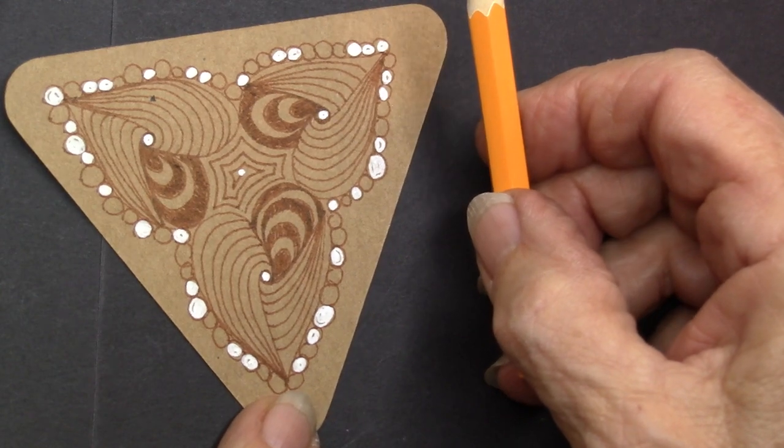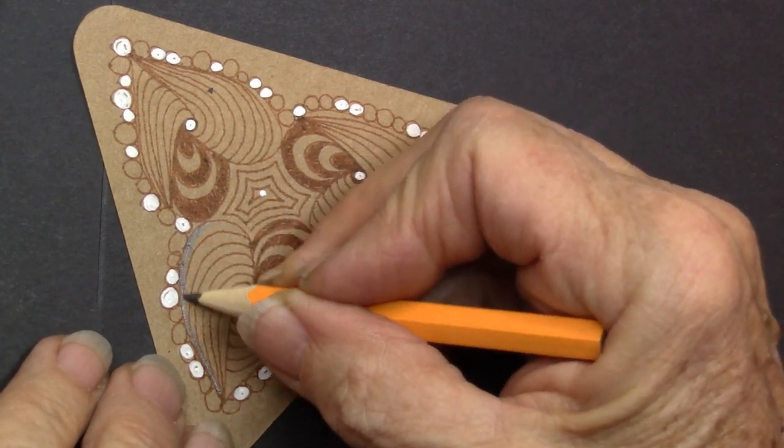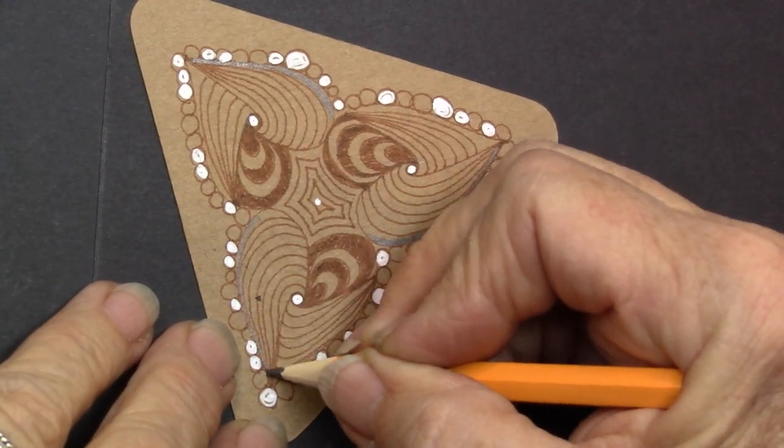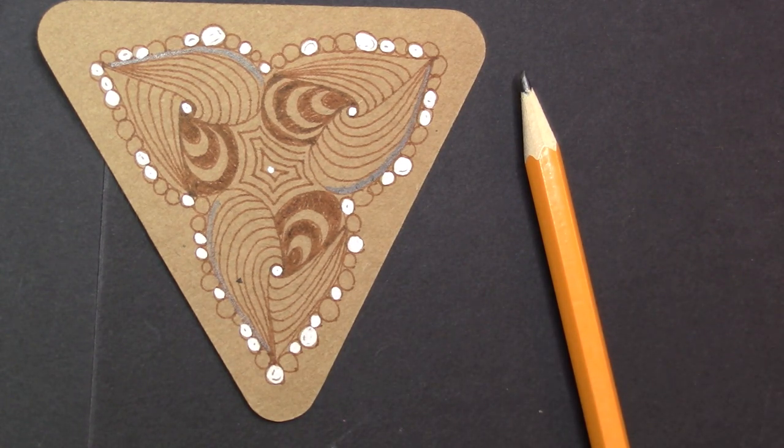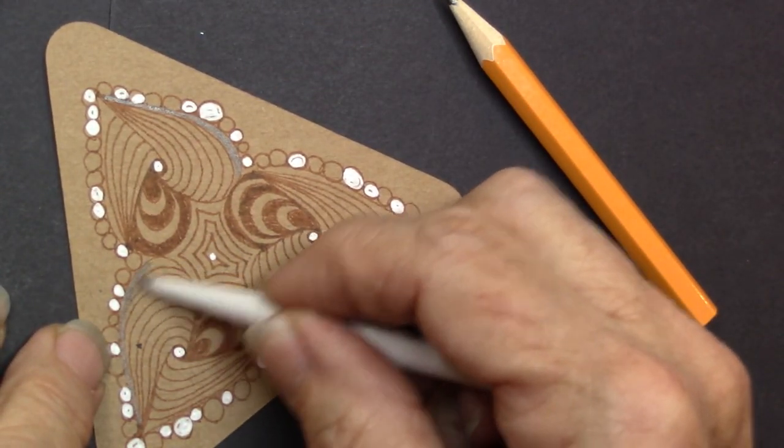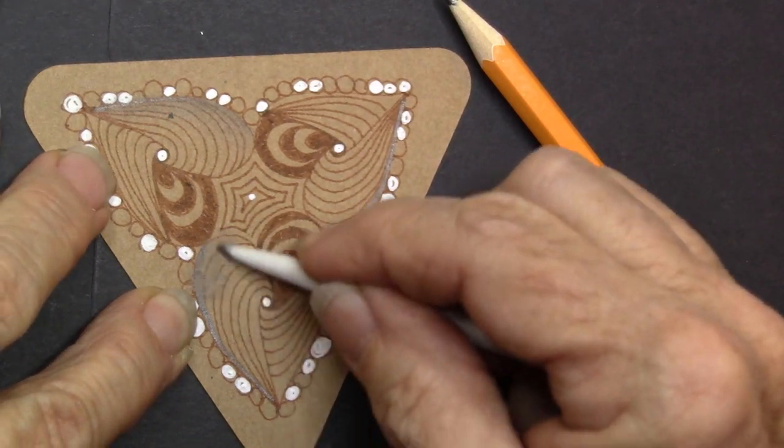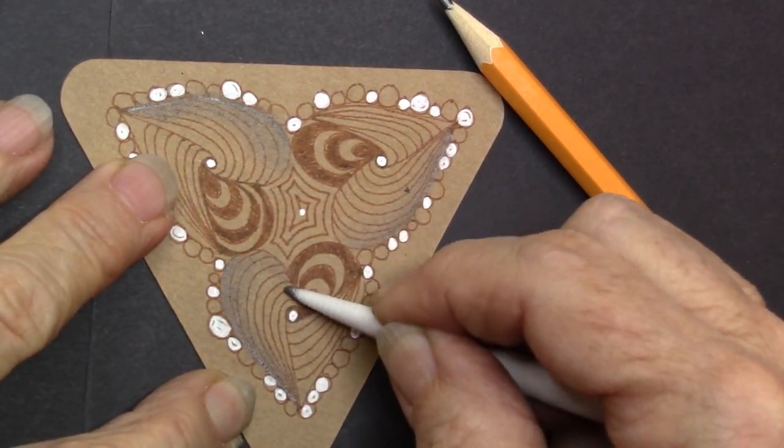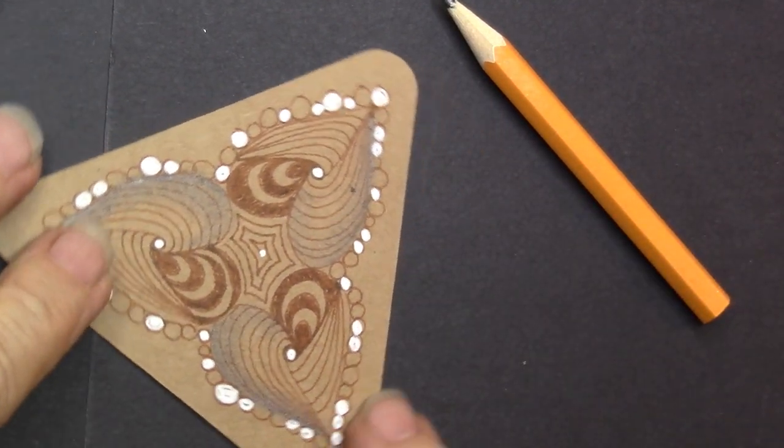So now I'm going to take my graphite pencil. And I am going to just put some graphite on this very outside part. And then I'm going to also take, well, I just sharpened it, you know how that goes. Oh, there it is. My shading stump and blend it in. And sometimes I can pull that graphite around. I don't have to add it, but I can just pull it around. But you can see how that.